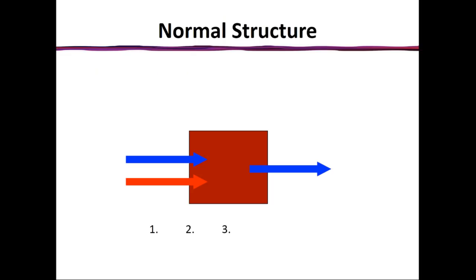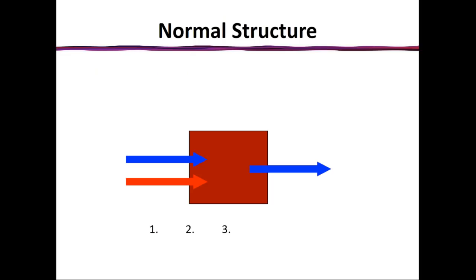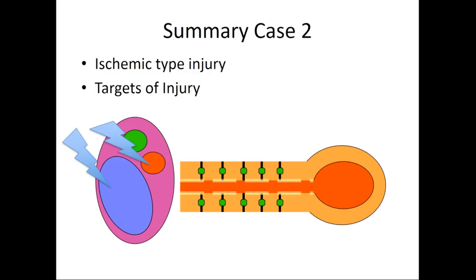You might ask: I've shown a cholestatic injury pattern — how can that happen? Well, remember that the bile duct is fed solely by a branch of the hepatic arterial system. So let's go through the blood flow to figure out each of the components and how they may affect each of the structures. The blood flow through the liver has two components: the portal venous and the hepatic arterial. It goes through the liver and exits through the hepatic veins.